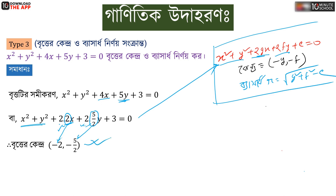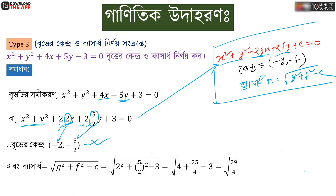So g equals minus 2, f equals minus 5 over 2, and c is the result. The radius is given by the square root of g squared plus f squared minus c.